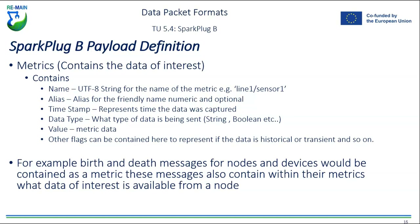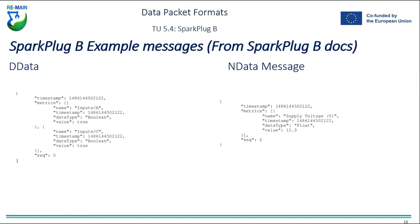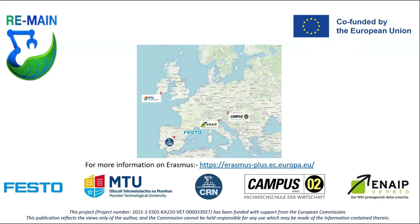The metrics contain the data of interest — including name, alias, timestamp, data type, value, and any other relevant data. Birth and death messages for nodes and devices are contained within the metrics. These messages also describe what data of interest is available from a node. Example messages from the Spark Plug B documentation give an idea of how the data is structured and how metrics and data types are presented.